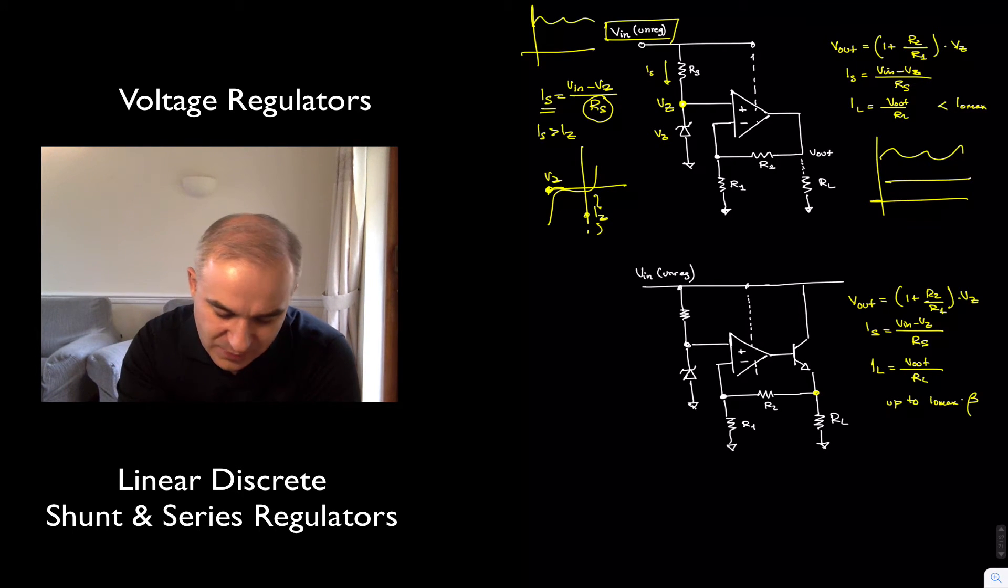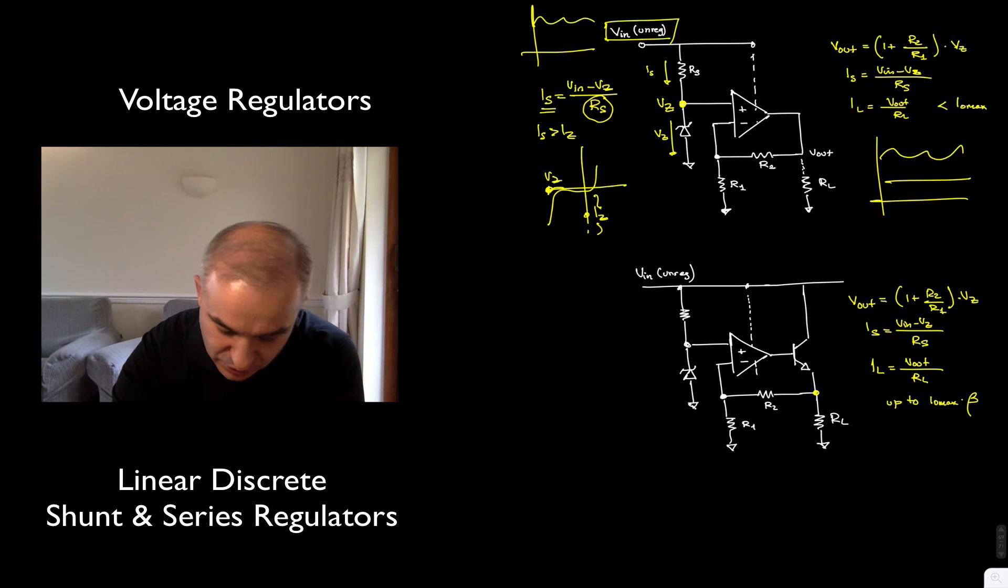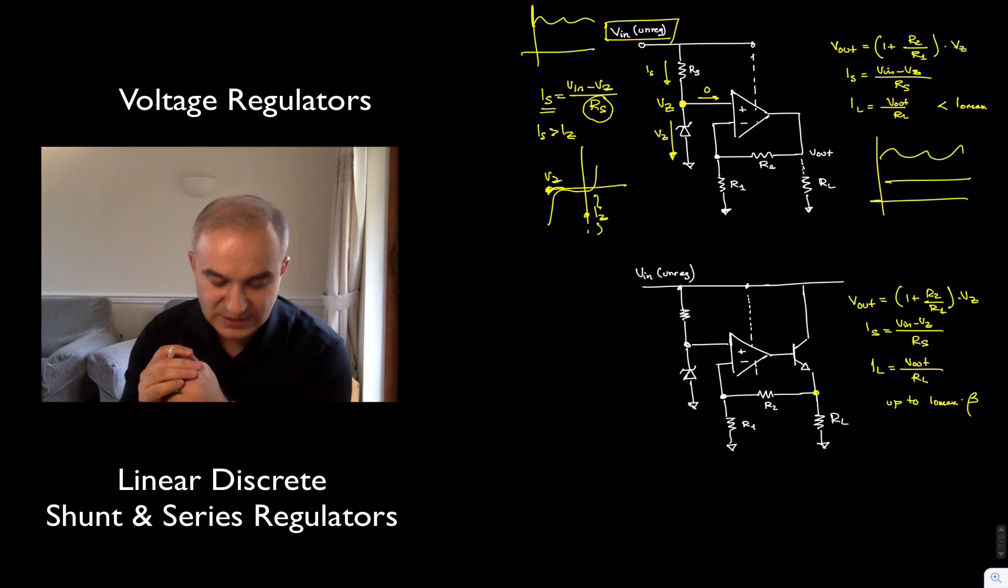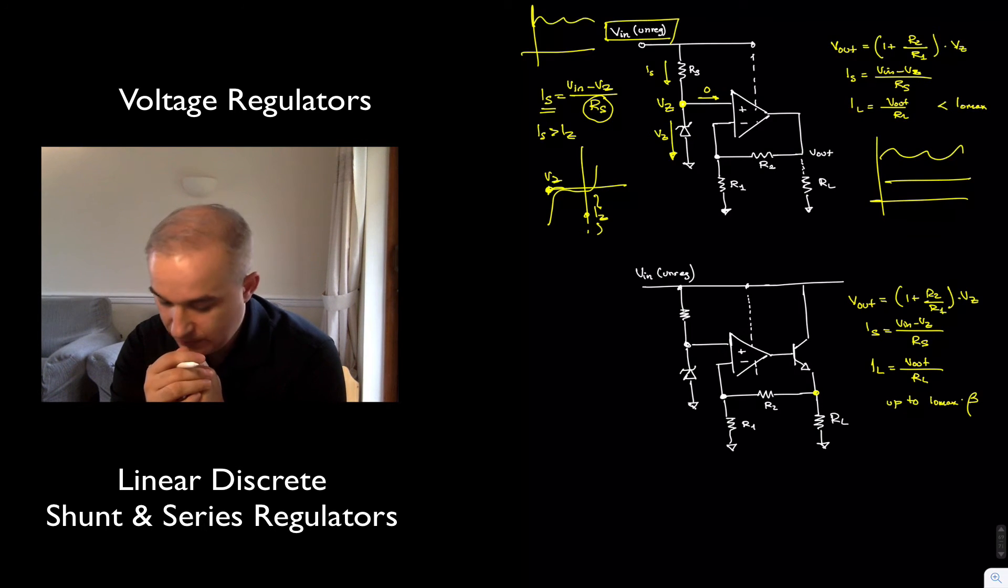Why am I able to do that approximation? Because the current, the IS, is going to go through the Zener voltage, the majority. Keep in mind that in the ideal operational amplifier analysis, the current entering the terminals, the inverting and the non-inverting terminals, is approximately equal to zero.